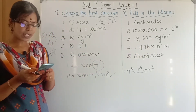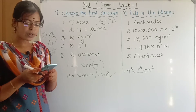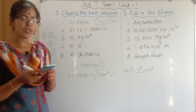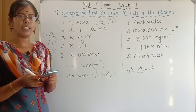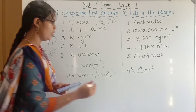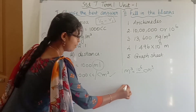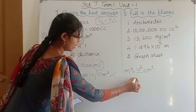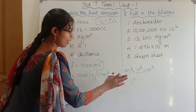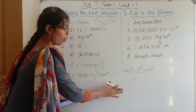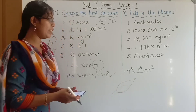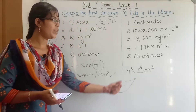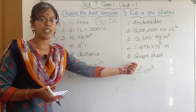Fifth question: the area of a leaf can be measured using — a leaf has an area which is an irregularly shaped object, so you can measure it using a graph sheet.